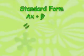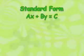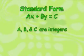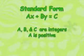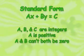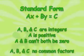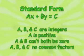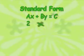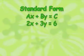The formal way of writing an equation is in standard form. Standard form is AX plus BY equals C, where A, B, and C are integers. A is positive. A and B can't both be zero, and A, B, and C have no common factors. All linear equations can be written in this form.